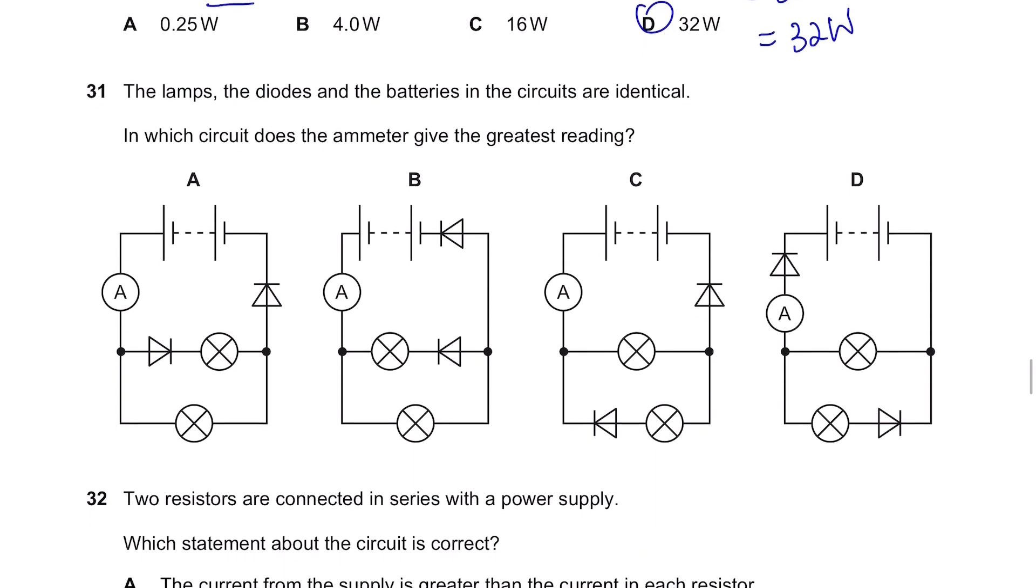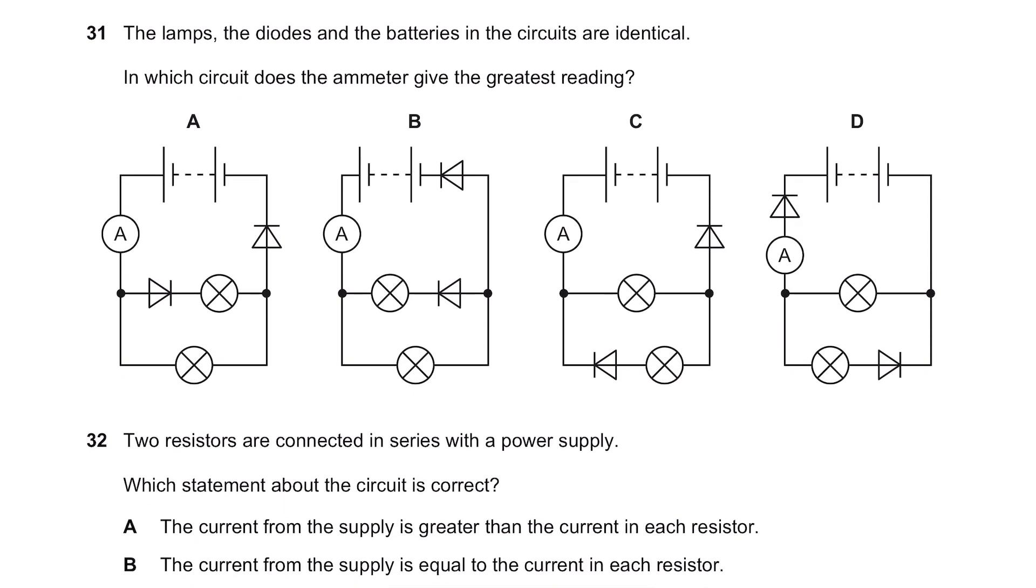Question 31. The lamps, the diodes and the batteries in the circuits are identical. In which circuit does the ammeter give the greatest reading? So basically, which circuit has the highest current? For A, it will travel like this and you will be able to go through this diode it's in the right direction and go back and another line. So let's say it started with 10 amperes of current and it divides to maybe 8 amperes and 2 amperes. They will all just still come back as 10 amperes in the end because they all managed to pass through.